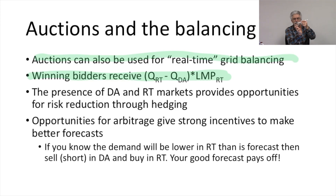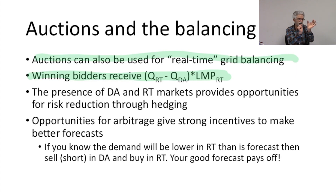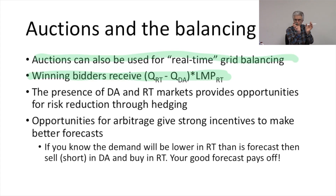That compensates sources that had a bid accepted in the day-ahead market and then a different amount that was actually required in the real-time market. The payment that's made is the difference in quantity times the price in the real-time market.